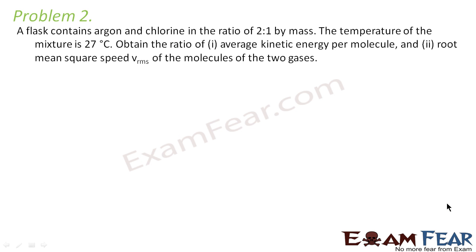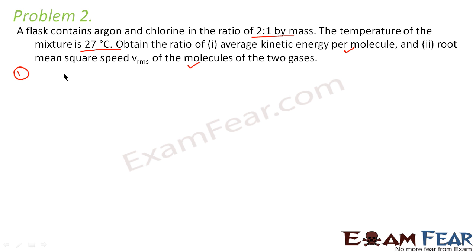Problem 2 states: a flask contains argon and chlorine in the ratio of 2:1 by mass. The temperature of the mixture is 27 degrees Celsius. Obtain the ratio of average kinetic energy per molecule and root mean square speed of the molecules of the two gases.